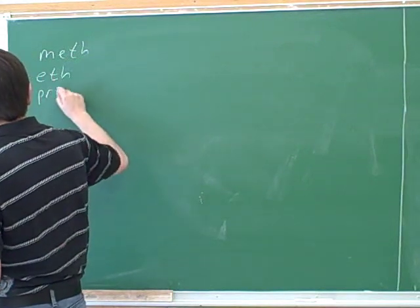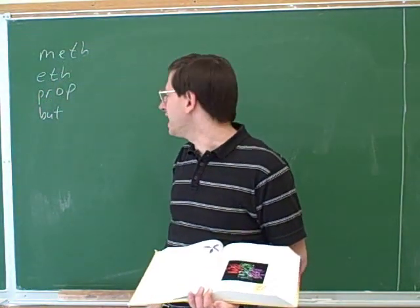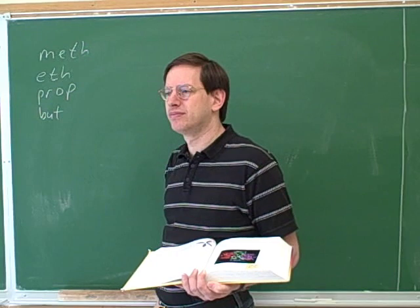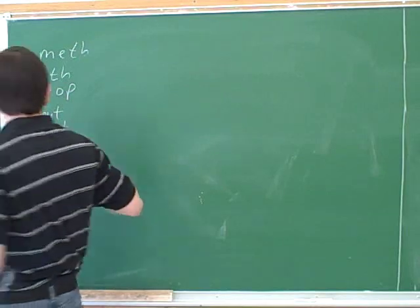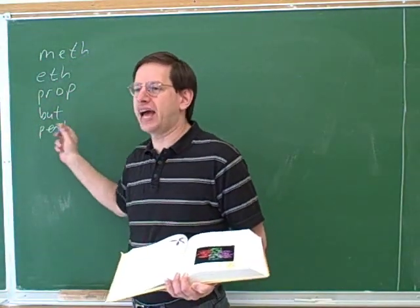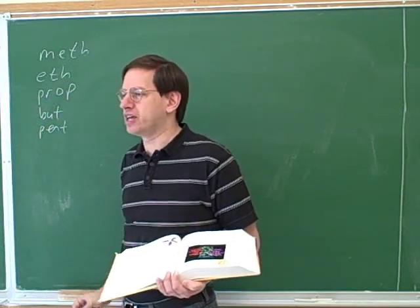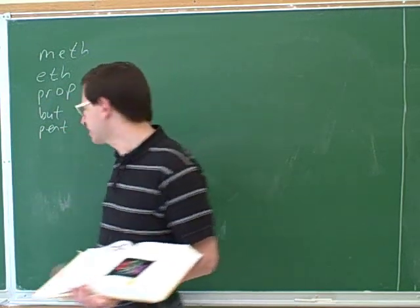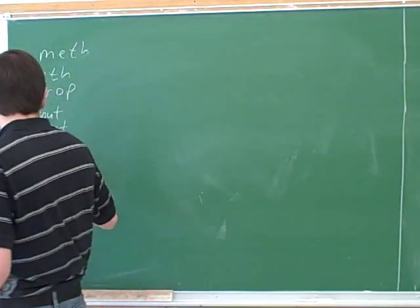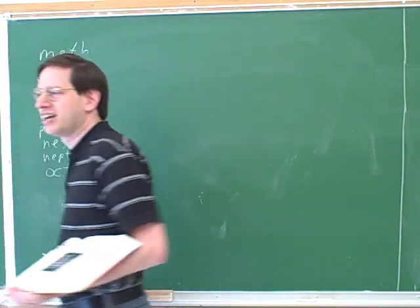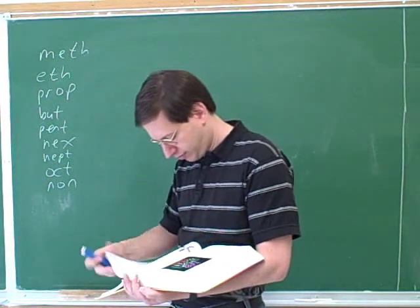Prop. Then but. Oftentimes people put these in the wrong order. And how about the next one? This one's intuitive. Pent. The reason that should be intuitive is because this is Greek or Latin for five, like a pentagon has five sides. And the remaining roots all come from Greek. So hexane. Hex, that's right. And then? Hept. Oct. And then non. And dec. Good.